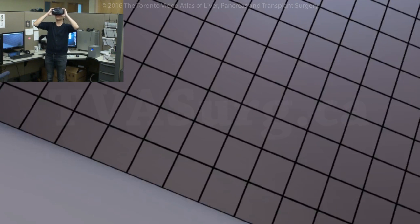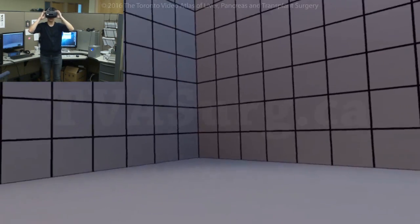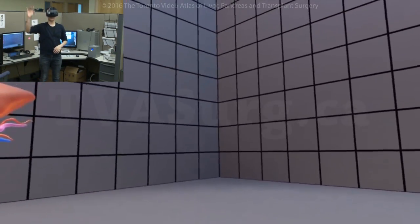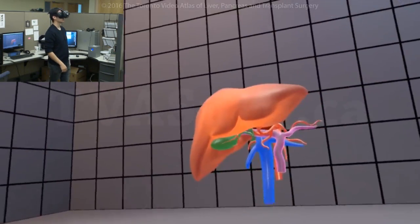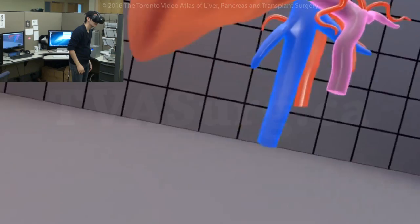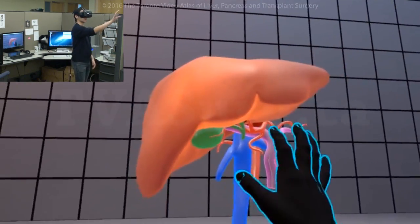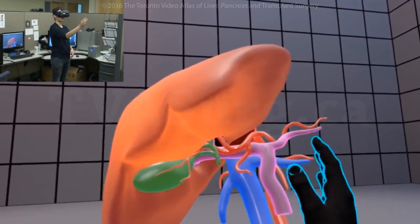So on the top left is myself with the HTC Vive headset, and on the main screen is what I see in VR. So we start with a liver model that we made from patient-specific CTs. We look around it, but we can also reach out and just touch it with our hands, rotate it, move it around to get a better view.